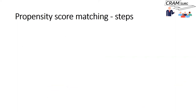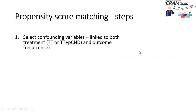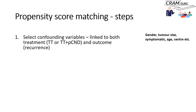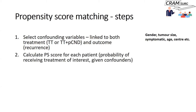Let's go through this step by step. The first step is to select the confounding variables — variables linked to both the choice of treatment and the outcome. These could be patient-related, tumor-related, or provider-related: gender, tumor size, whether the tumor was detected symptomatically or incidentally, age, and so on. Once you've decided on these confounding variables, you calculate a propensity score for each patient, which is essentially the probability of receiving the treatment of interest given all these confounders.